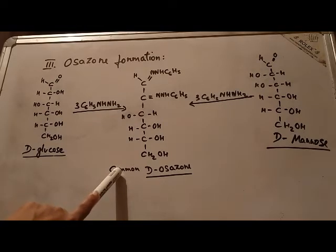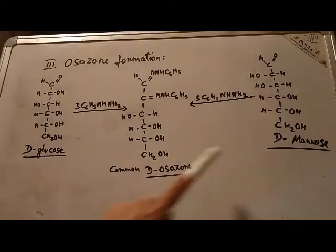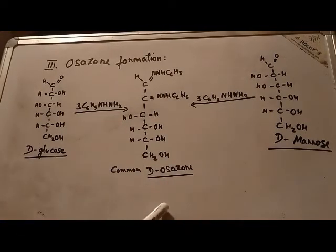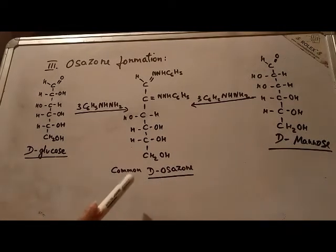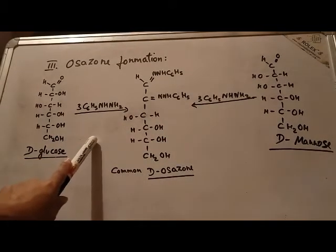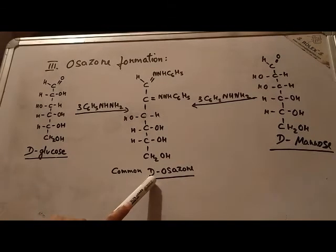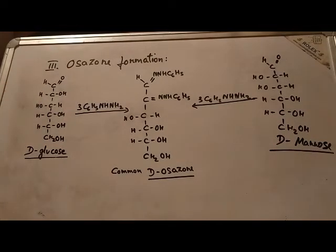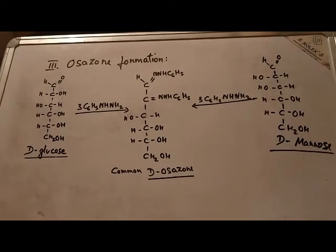The bisphenylhydrazone, commonly known as the osazone, allows two sugars of closely related structures to give the same osazone. For example, D-glucose and D-mannose, both treated with excess phenylhydrazine, form the same osazone. Glucosazone and fructosazone are also identical. Since the reaction requires a free carbonyl group, only reducing sugars can form osazone. Sucrose, for example, being a non-reducing sugar, is unable to form osazone.